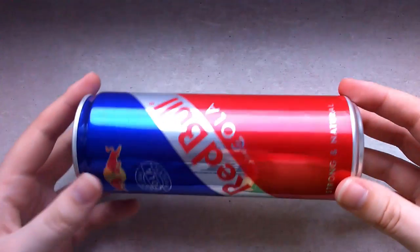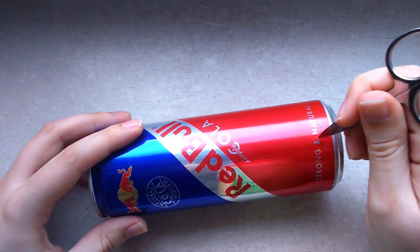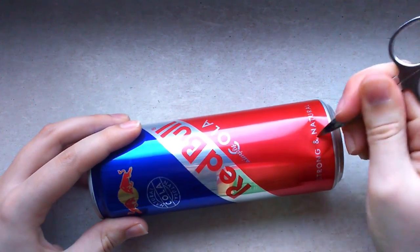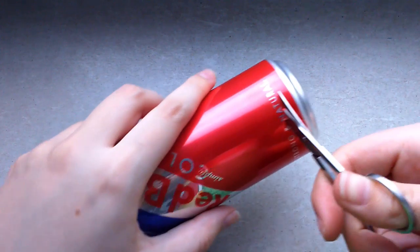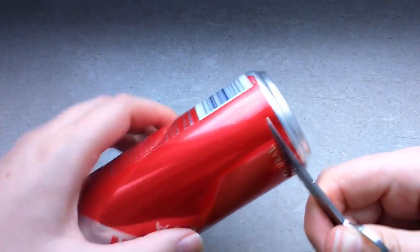So first of all we are gonna cut the can into a sheet of aluminum. Take the can and stab it with your scissors. You can use normal scissors for this too, by the way. Then cut off the bottom part.